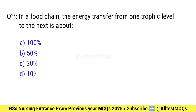Question number 57. In a food chain, the energy transfer from one trophic level to the next is about what percentage? Right option is D: 10%.